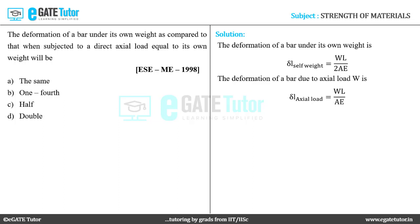Now when we look at the two expressions for the deformation due to self-weight and deformation due to axial load, we find out that the deformation due to self-weight is equal to half of the deformation due to axial load. Hence, the correct answer to this question turns out to be option C.